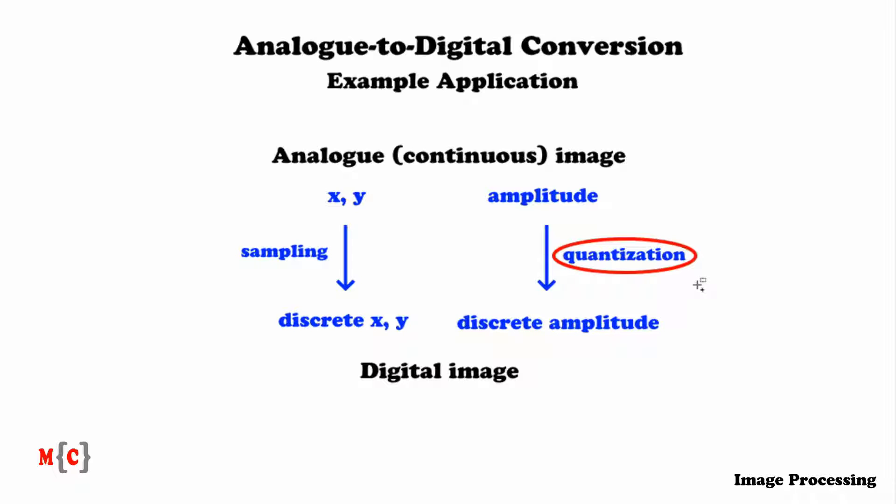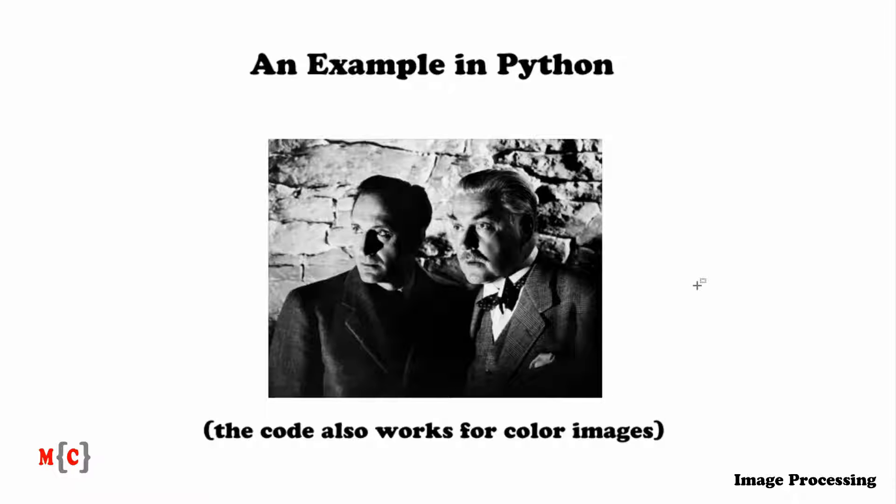For this example in Python, we will be processing the following image. And as a disclaimer, the code that I'm going to present also works with color images. For ease of explaining this, we're going to use this gray scale image.